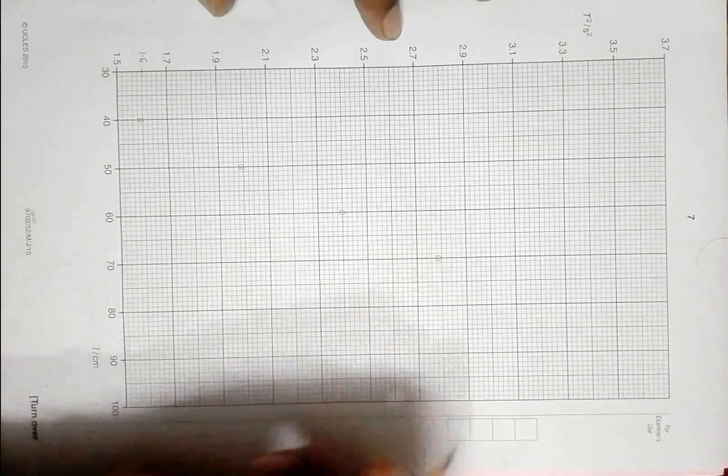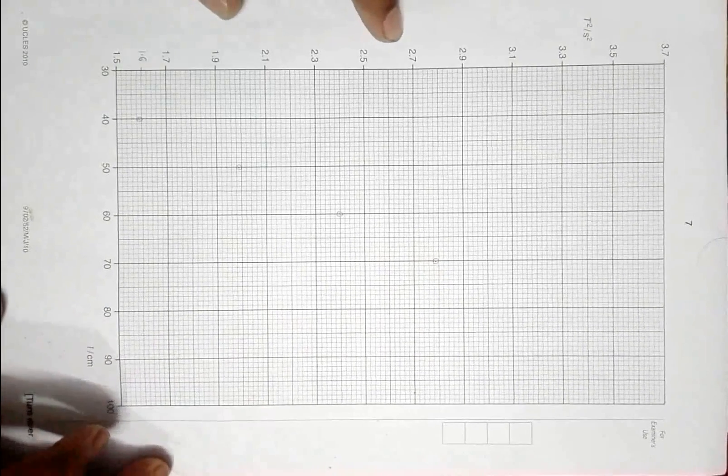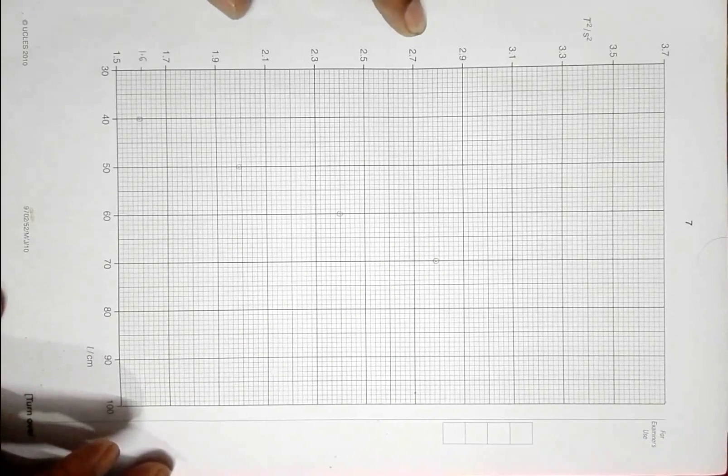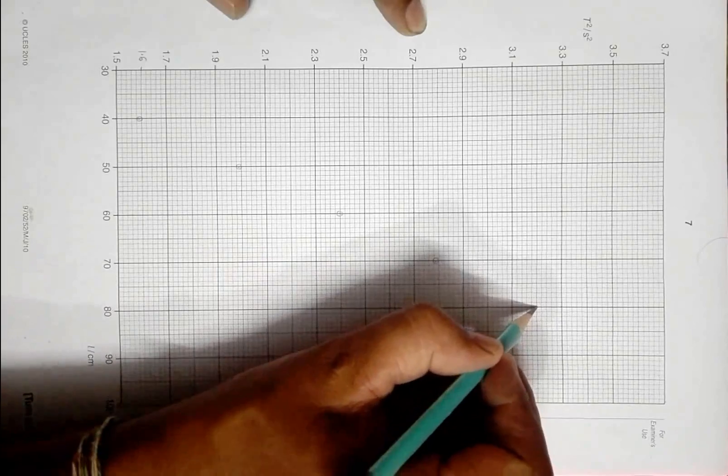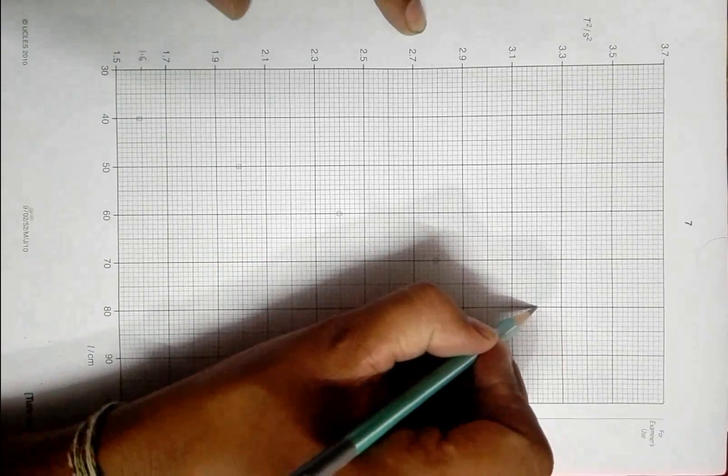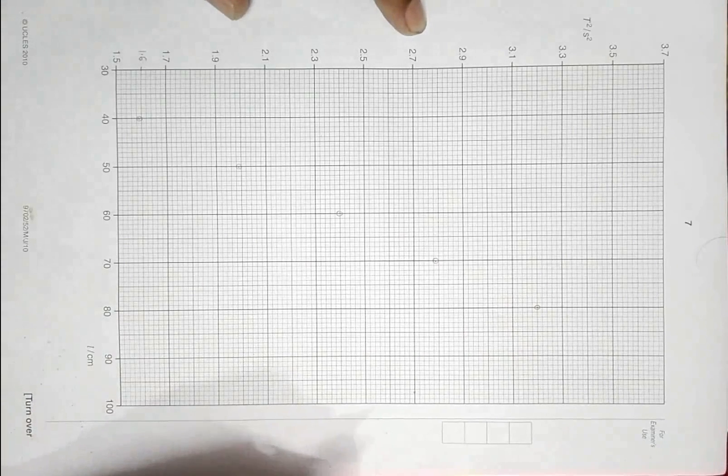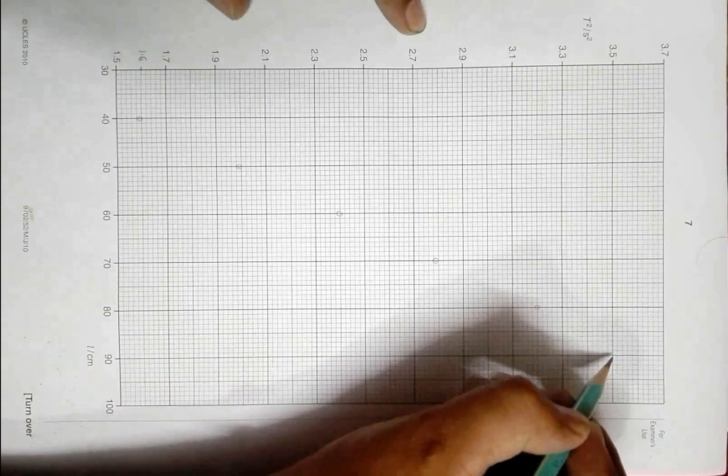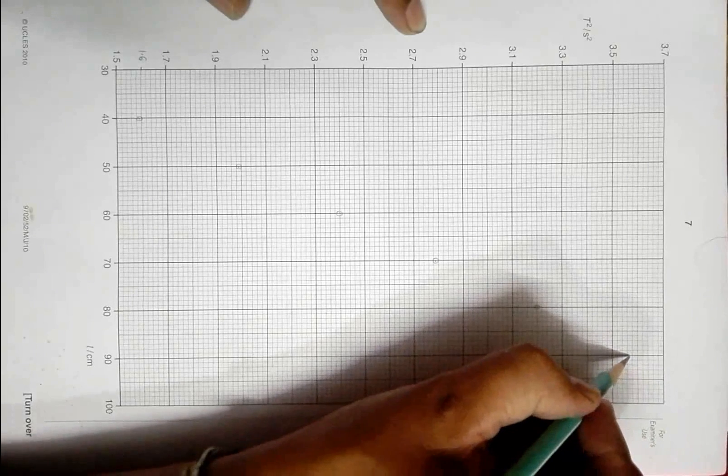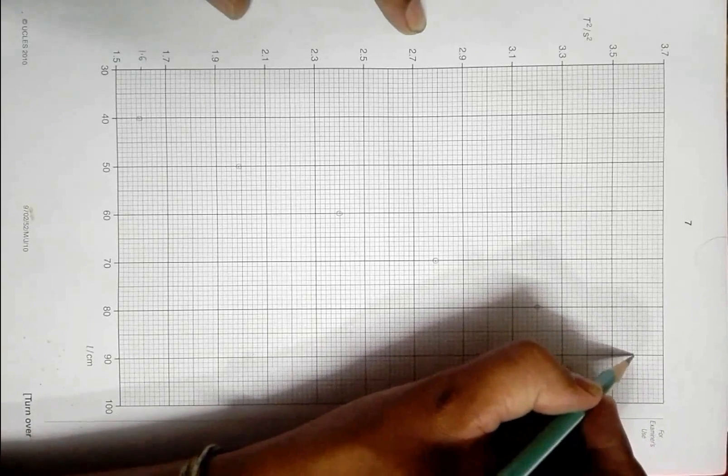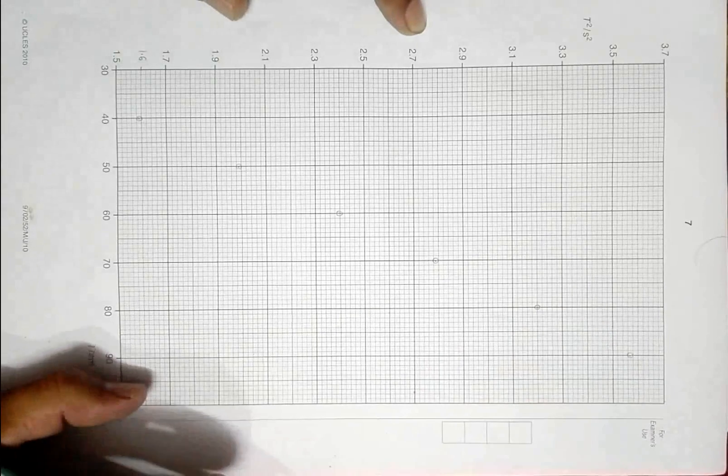Actually you can also use a cross, but I personally do not like the cross, so I am drawing small circles here. At 80 centimeters is 3.20, so this is the point and a small circle here. And at 90 centimeters, 3.57. So 3.52, 54, 56, 57. This is how you plot it.